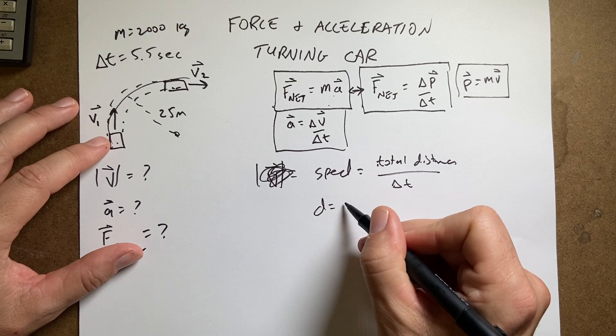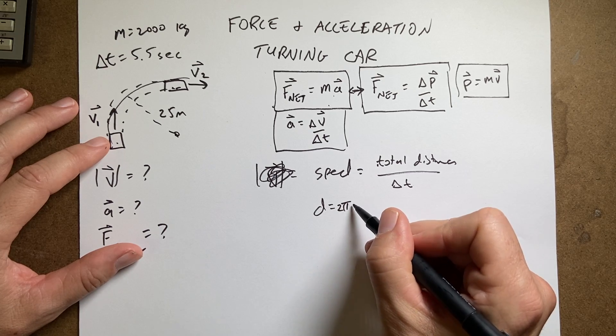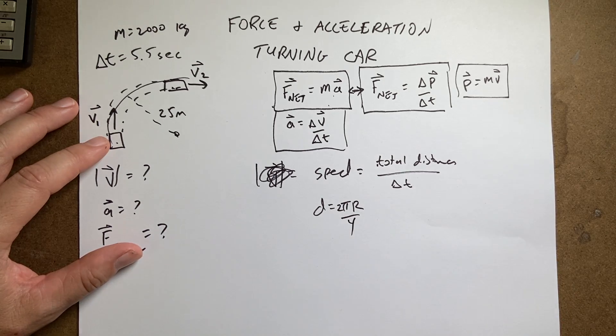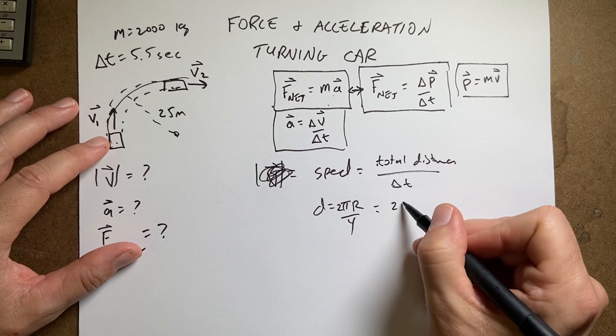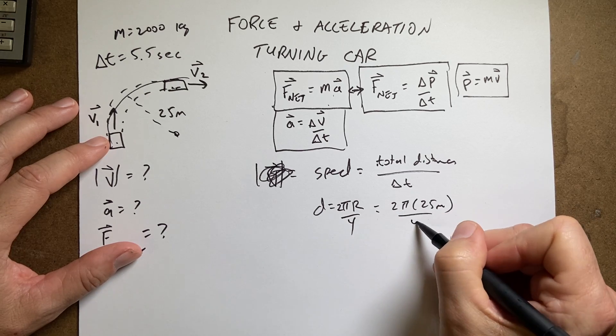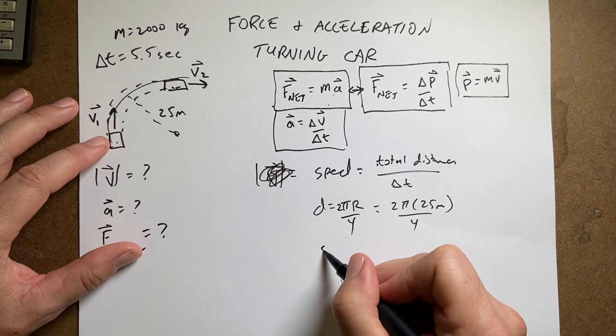So, d is going to be 2 pi r divided by 4. So that's going to be 2 times pi times 25 meters divided by 4.